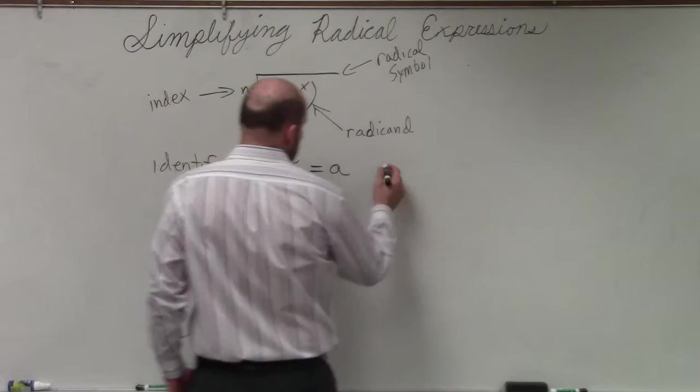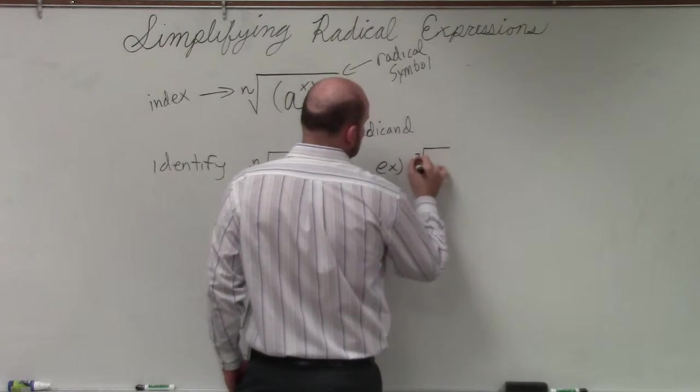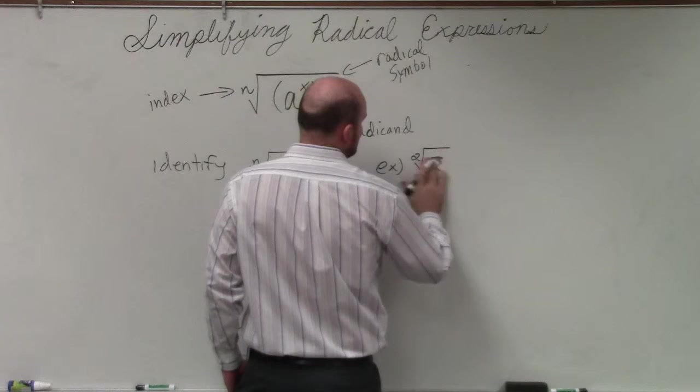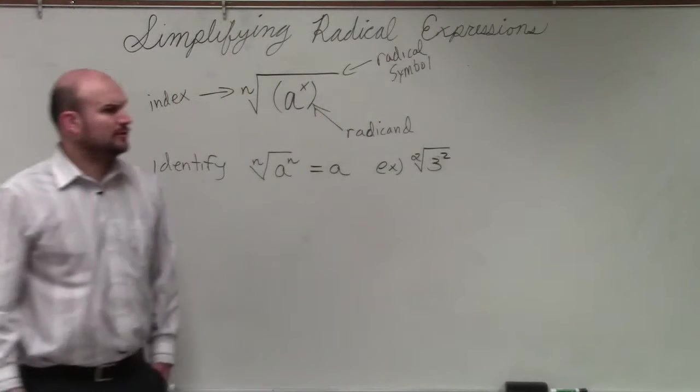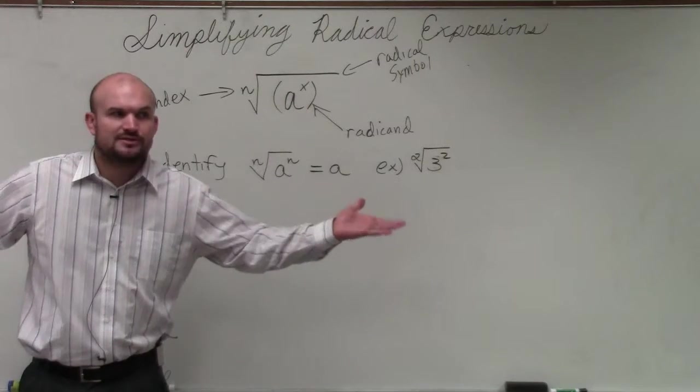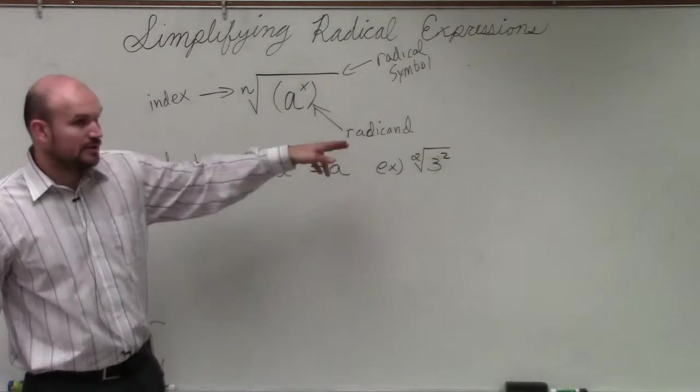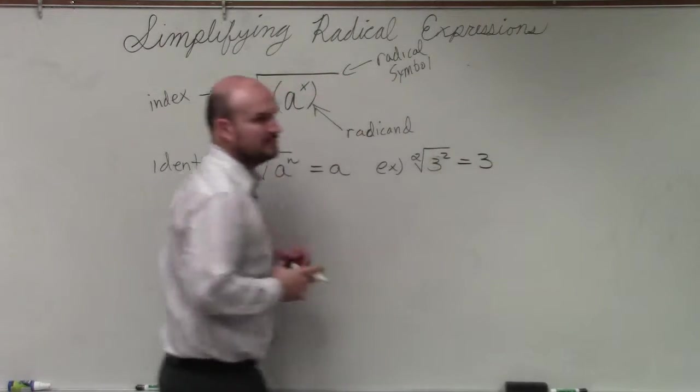So let's look at some examples. If I had the square root of 3 squared, well, we know 3 squared is 9, right? The square root of 9 we know is 3. But the square root of 3 squared is just equal to 3. Does everybody agree with me?